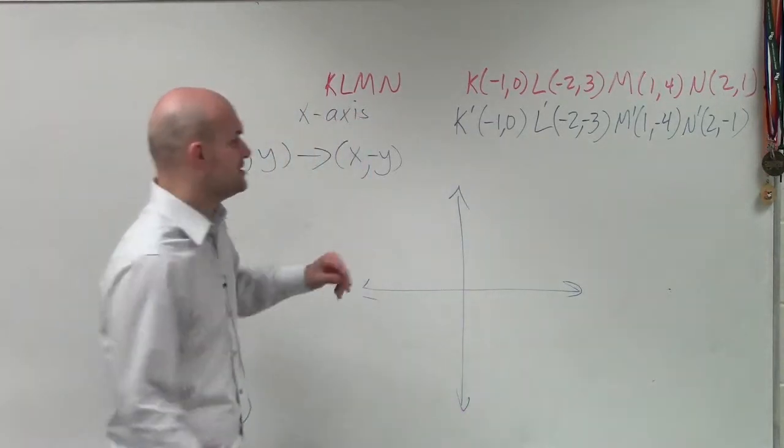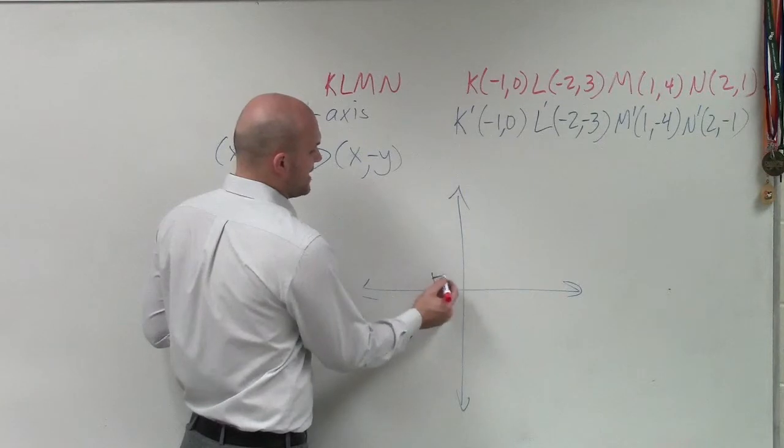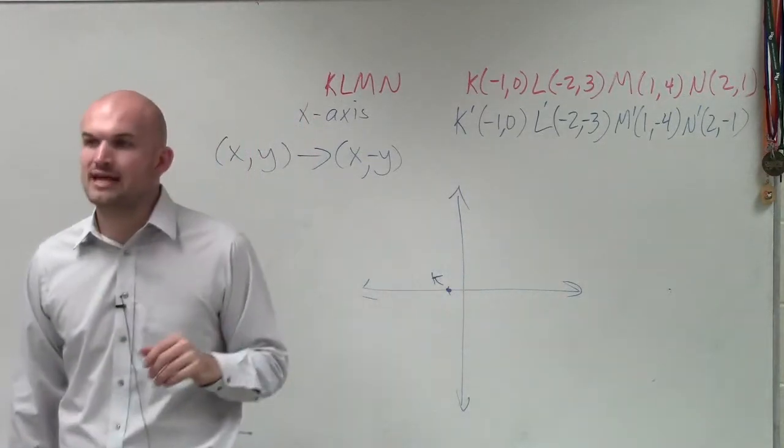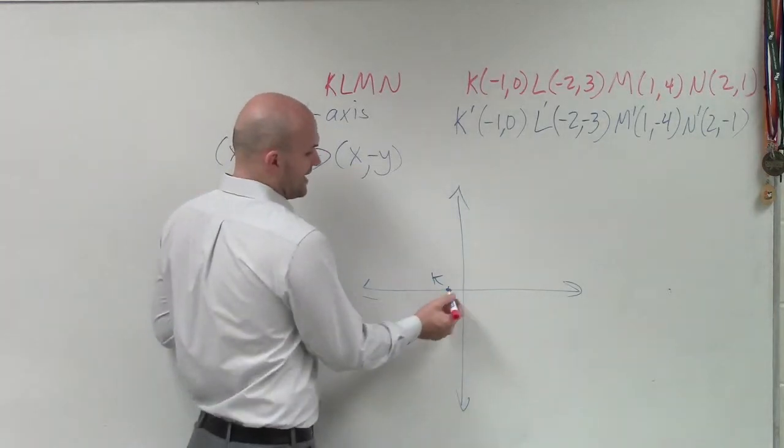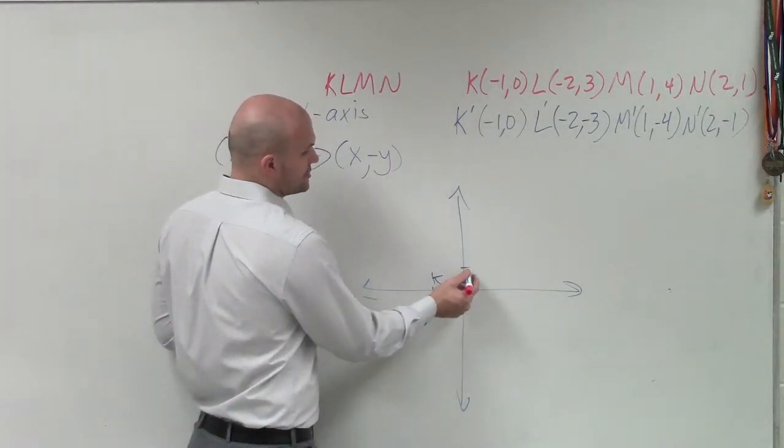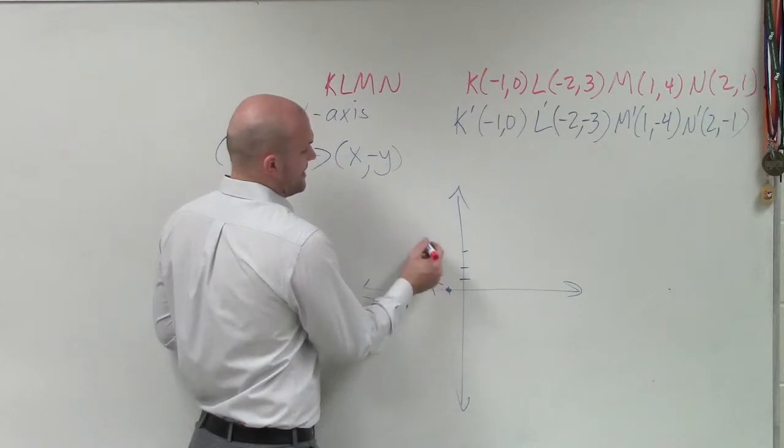So our original image had negative 1, 0. We label that. Since we plot the point, we're going to label that k. Over here, I have negative 2 up 3. 1, 2, 3. That is my L.